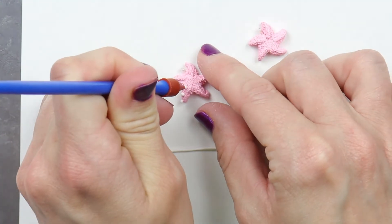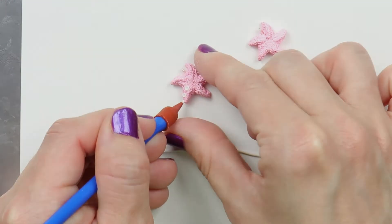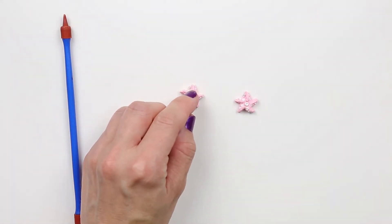Use a ball tool or a round ended tool to press in the center of each ball of clay. Do this for each starfish limb. Place one ball of clay in the center of the starfish.